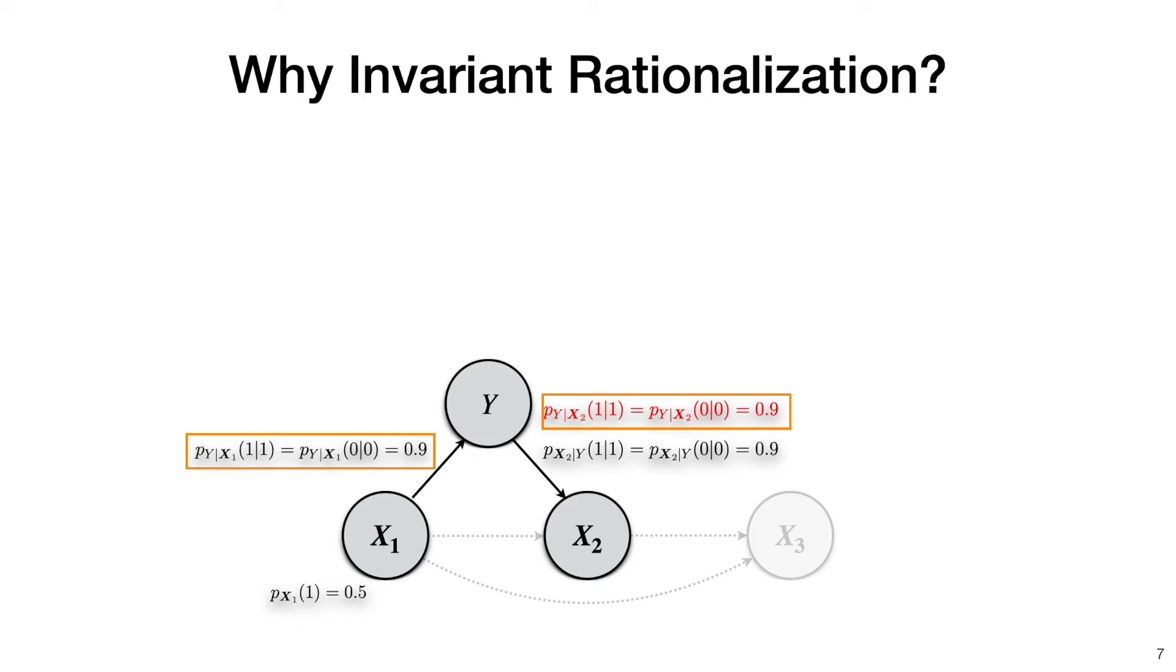Furthermore, if we specify the prior of x3 as shown on the slide, then the conditional probability of y given x3 is again the same as those given x2 and given x1.